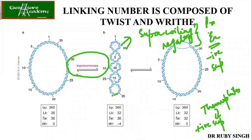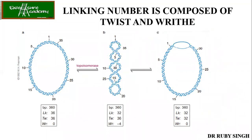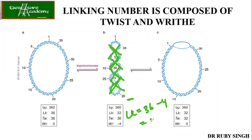What is supercoiling? The DNA is already double-stranded and it gets twisted again. Maximum plasmids exist in this CCC DNA form. For the calculation: with 360 base pairs, the writhe (Wr) counts how many times the supercoil crosses — here it is 1, 2, 3, 4 crossings. Since it is left-handed, the writhe is negative: −4. So LK = 36 + (−4) = 32.